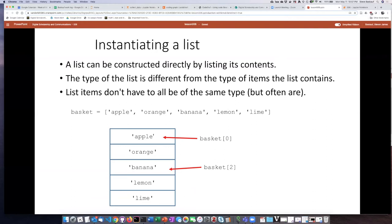One thing to be clear about is that the type of the list itself is different from the type of the items that the list contains. The type of the list itself is list and the items it contains could be any other kind of object. It could be strings, booleans, or anything else. Usually they're the same kind of thing, but they don't have to be.